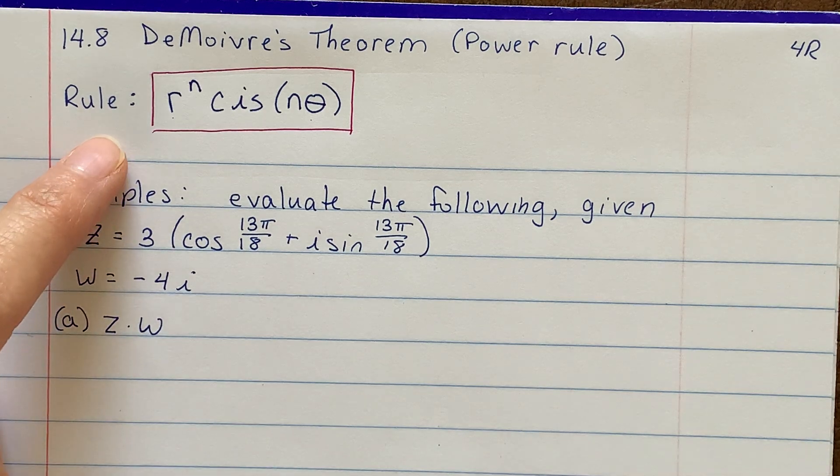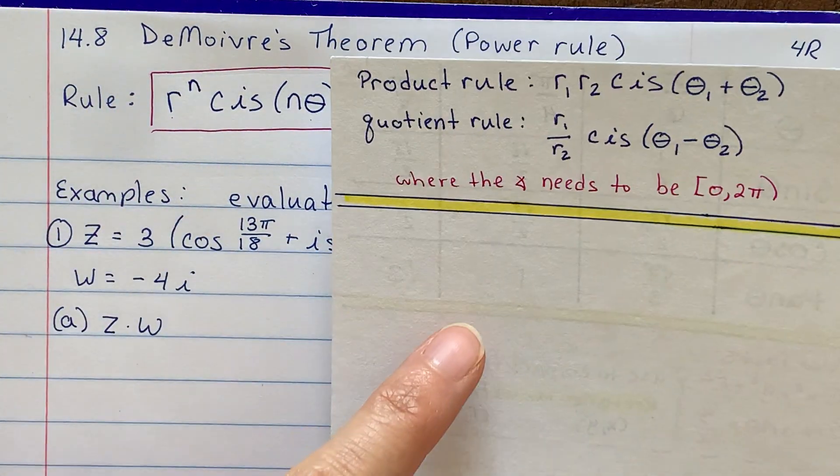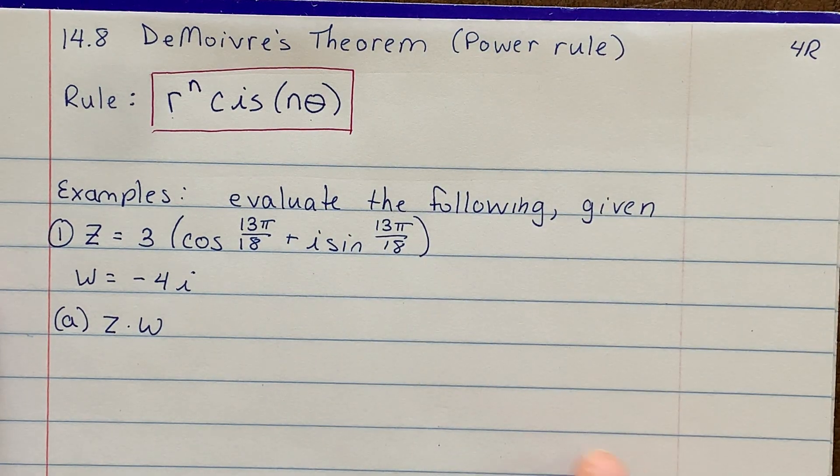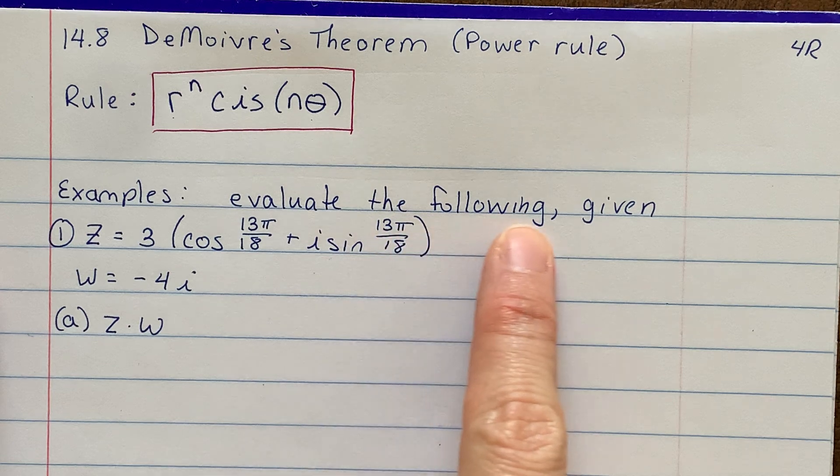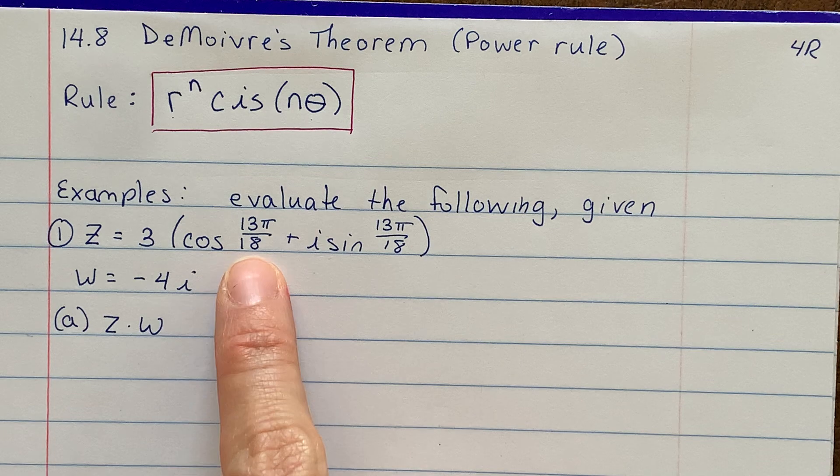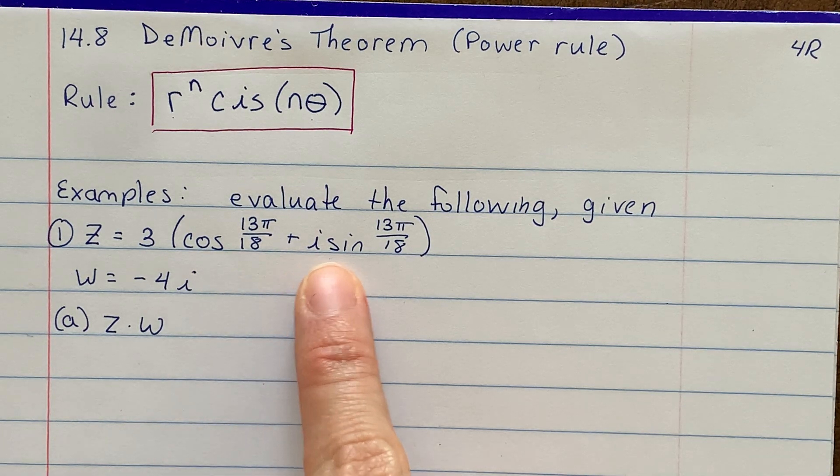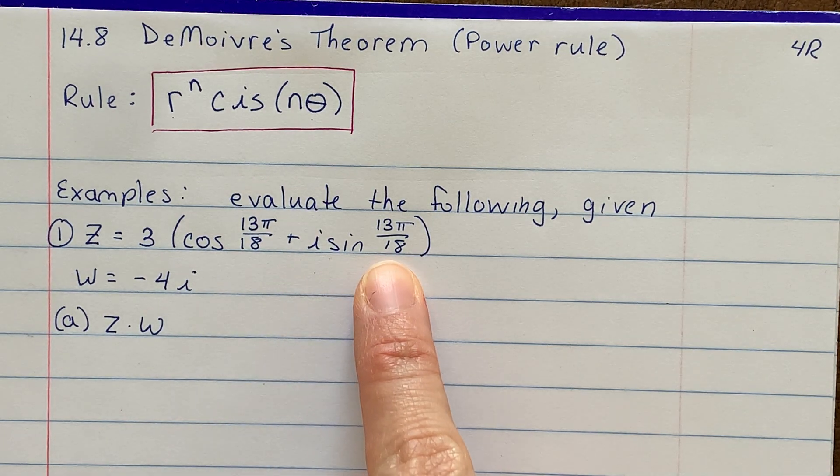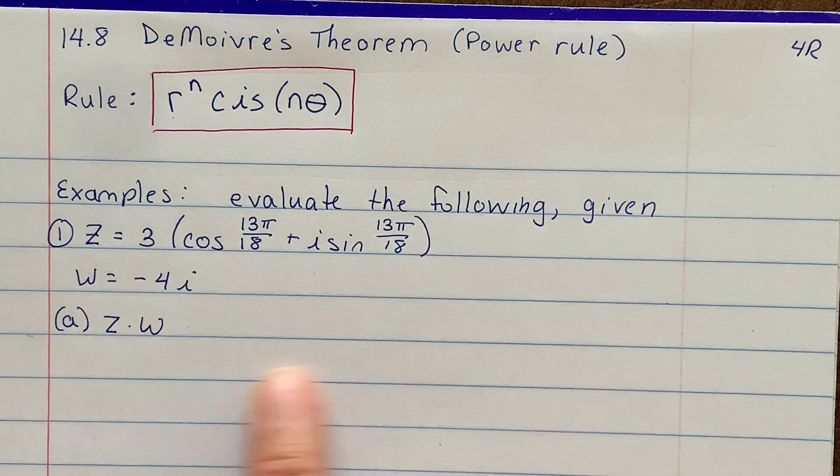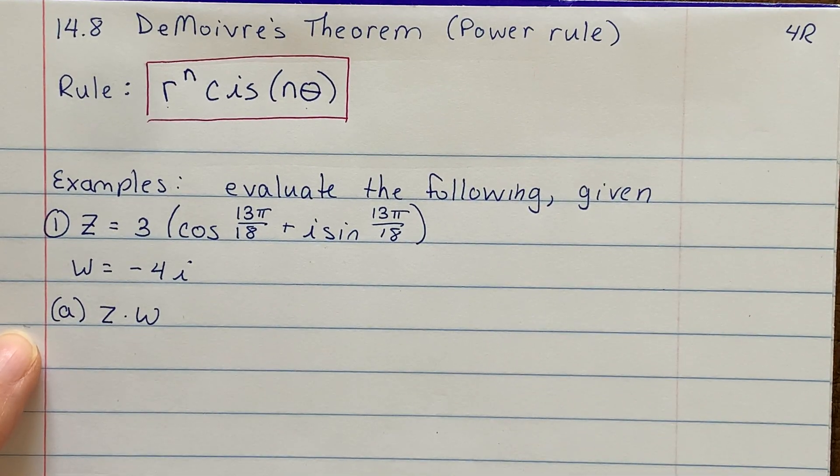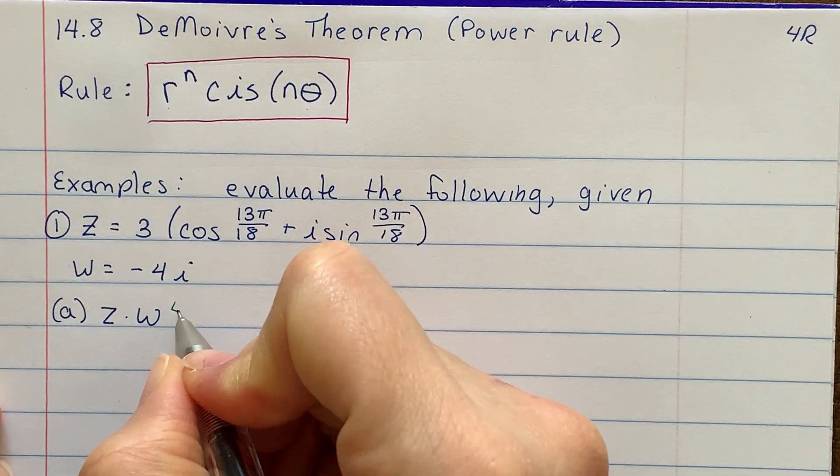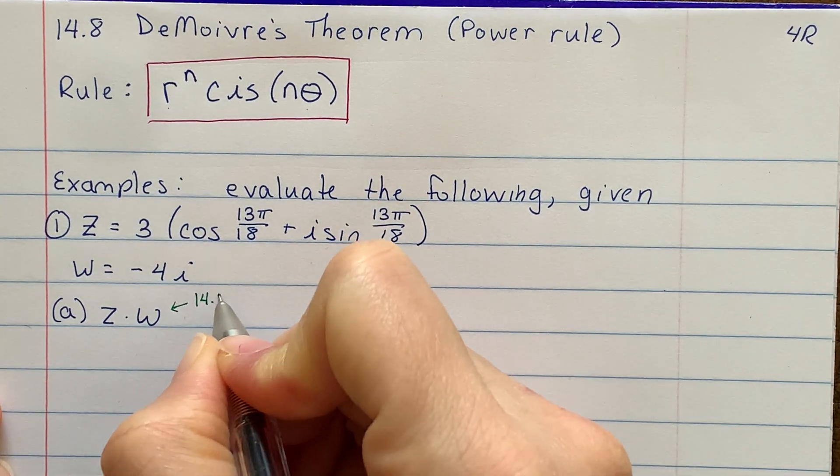Again, that looks pretty complex. And I'm going to give you an example today, and we'll practice using that new formula. So at the end of my video, when I'm done, I'm going to go ahead and add that to my formula card as well. I've got one example I'm going to go through with you today. It says evaluate the following, given z is 3 cosine 13π over 18 plus i sine 13π over 18, and w is negative 4i. The first thing I want you to do is z times w. Wait a second. This is what we learned yesterday.